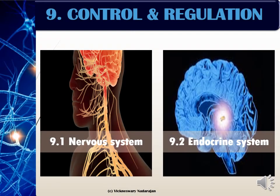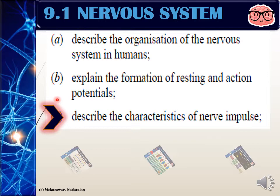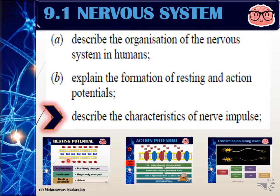In Chapter 9, Control and Regulation, Subtopic 9.1, Nervous System. Today I will be describing the characteristics of nerve impulse. Make sure before you are viewing this video, you have already seen my three previous videos about resting potential, action potential, and transmission of impulse along an axon, because the characteristics I am going to explain in today's video are connected to what I have already explained in the previous videos.